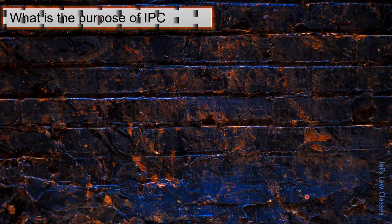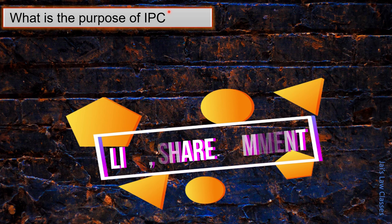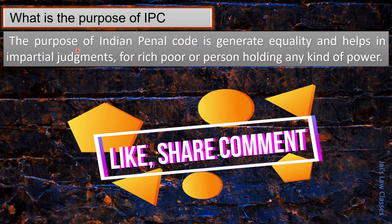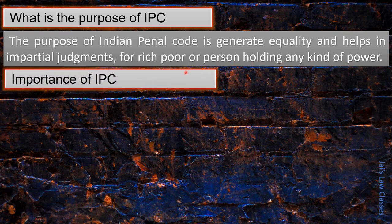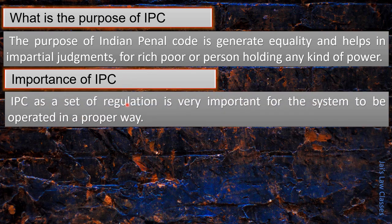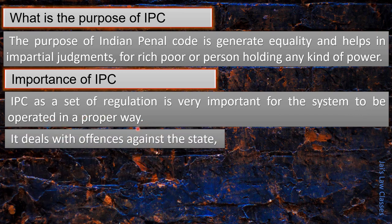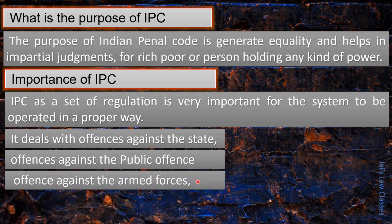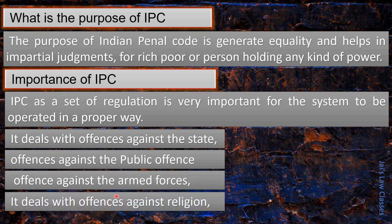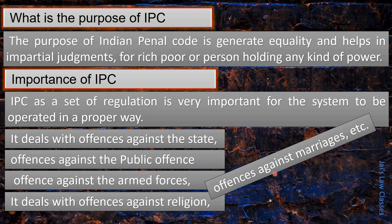The purpose of IPC is to generate equality and help impartial judgments for the rich, poor, or persons holding any kind of power. The importance of IPC is that this set of regulations is very important for the system to operate properly. It deals with offences against the state, offences against the public, offences against the armed forces, offences against religion, and offences against marriages.